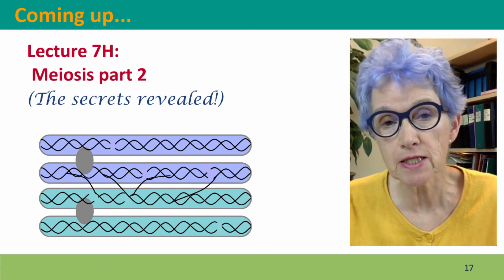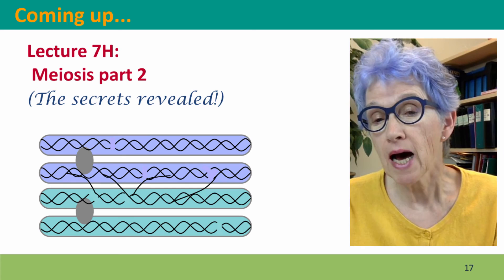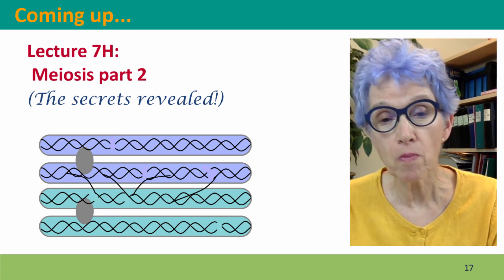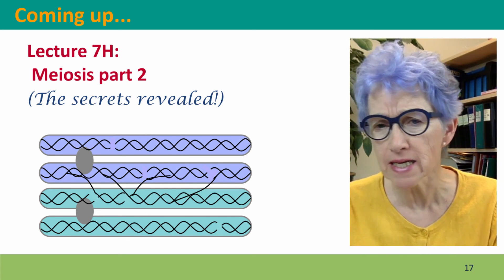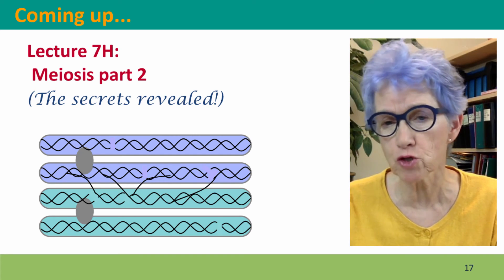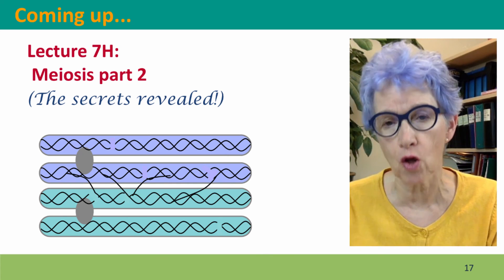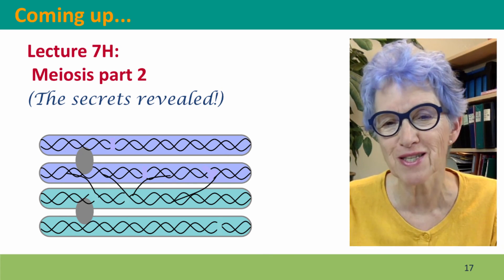Coming up next is probably my favorite part, certainly of Module 7, which is a discussion of how the homologous chromosomes find each other in this pairing and how they manage to pair so perfectly that when they cross over, not a single base is lost or added. I hope to see you there.